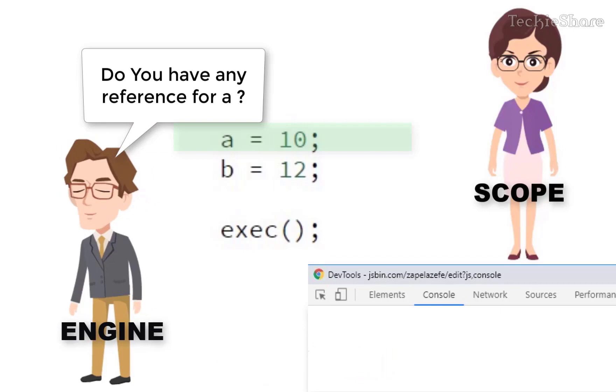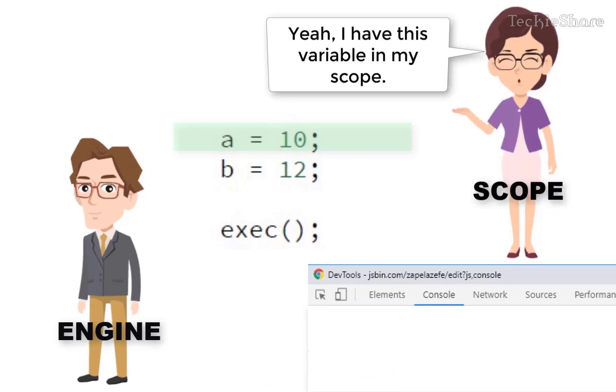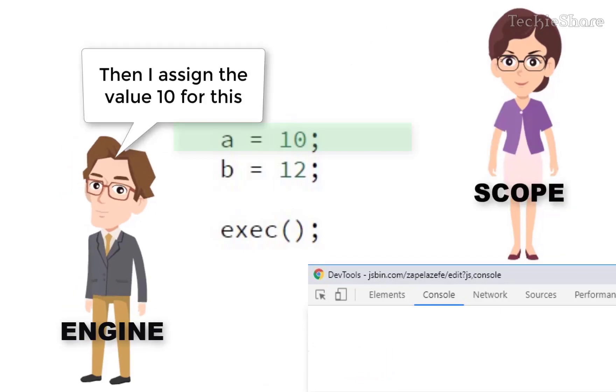Scope, do you have a reference for A? Yeah. I have the variable in my scope. Then I assign the value 10 for this.